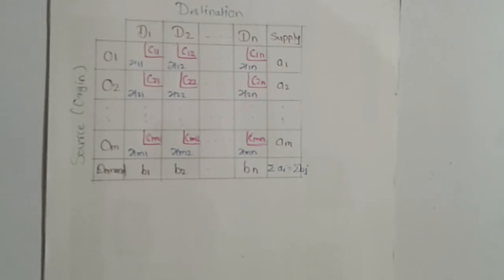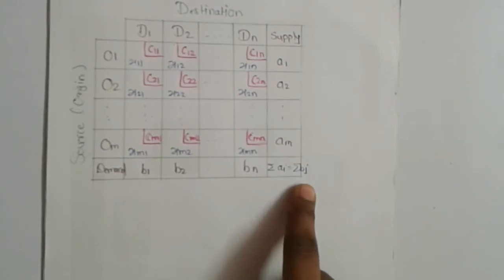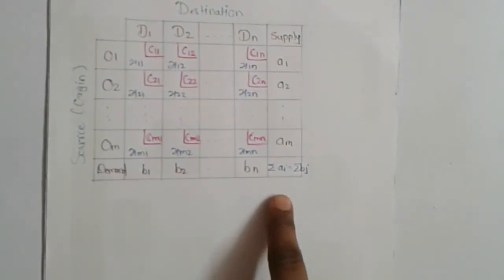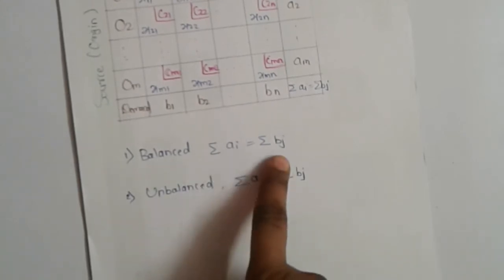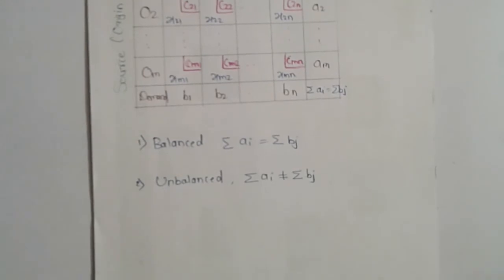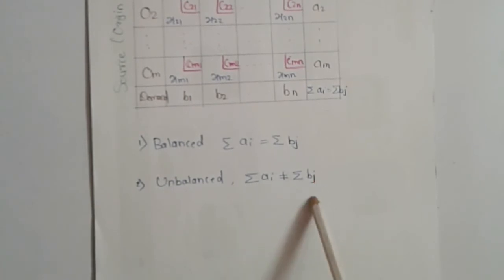Now there are two types of transportation problem: the balanced transportation problem and the unbalanced transportation problem. When the summation of Ai equals the summation of Bj — that is, when the total supply equals the total demand — the problem is said to be a balanced transportation problem. When the total supply is not equal to the total demand, then the problem is an unbalanced transportation problem.